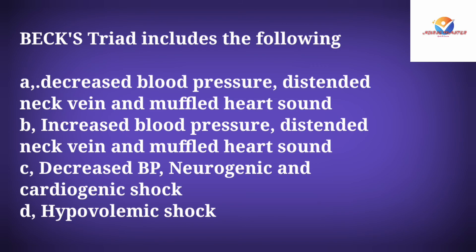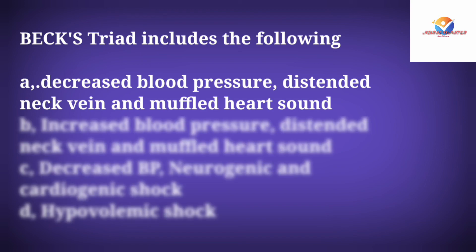Question: Beck's Triad includes which of the following? Option A: Decreased blood pressure, distended neck veins, and muffled heart sounds. Option B: Increased blood pressure, distended neck veins, and muffled heart sounds. Option C: Decreased blood pressure, neurogenic and cardiogenic shock. Option D: Hypovolemic shock. The correct answer is Option A: decreased blood pressure, distended neck veins, and muffled heart sounds.